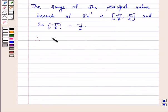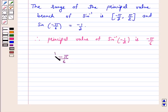Therefore, the principal value of sine inverse minus 1 by 2 is minus pi by 6. So the answer for the above question is minus pi by 6.